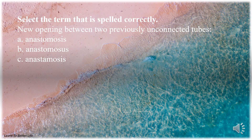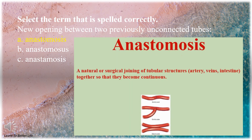Select the term that is spelled correctly. New opening between two previously unconnected tubes. A. Anastomosis. B. Anastomosis. C. Anastomosis. The answer is A. Anastomosis.